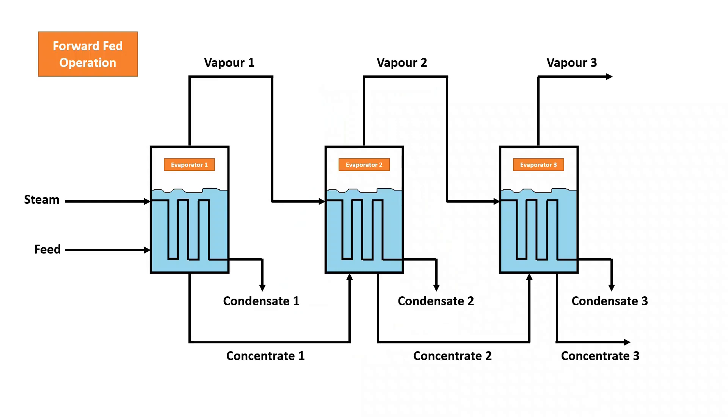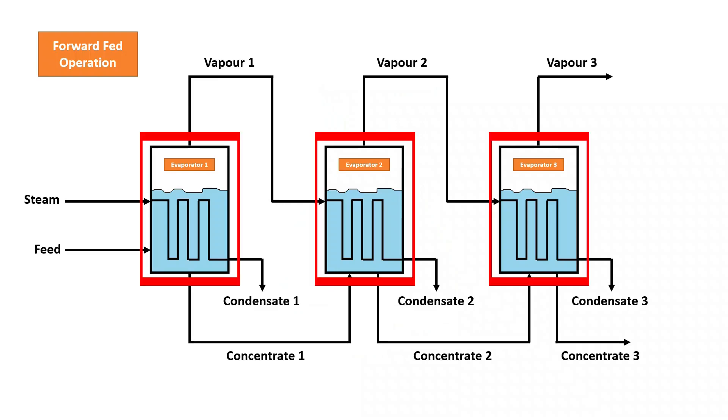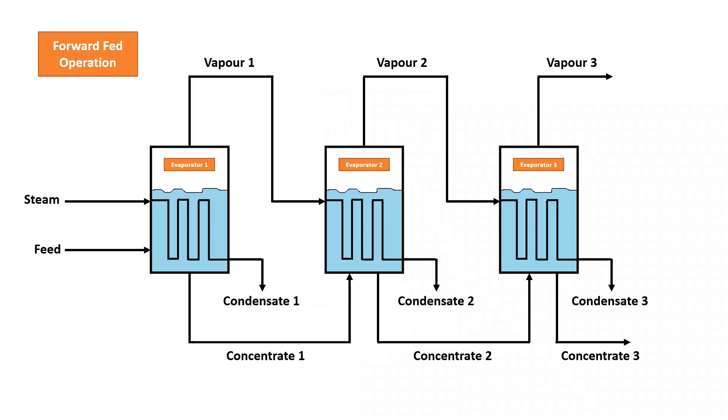In the diagram shown, we have a forward fed operation with three single effect operators connected in series, so we call this a multiple effect operator, or more specifically a triple effect operator. The system works very similarly to a single effect operator.